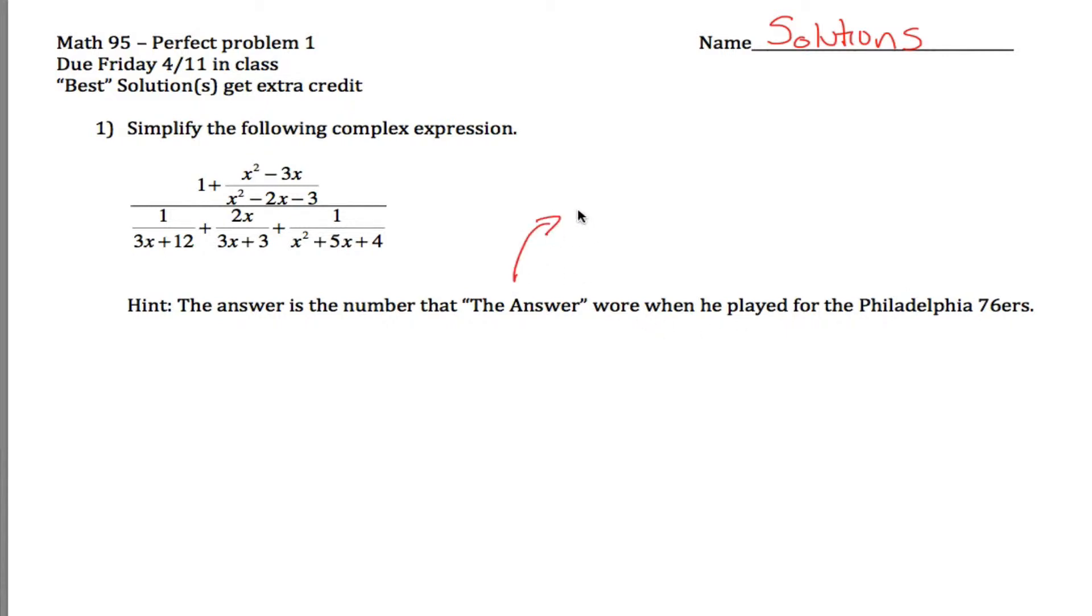The answer is whatever number the guy whose nickname was The Answer wore when he played for the Philadelphia 76ers. That's Allen Iverson, one of the more fun basketball players to watch, and he wore number 3. So what that means is I'm going to simplify the hell out of this thing and my final answer should be, if I do everything exactly right, the number 3. Hard to imagine at this point, but let's work on it.